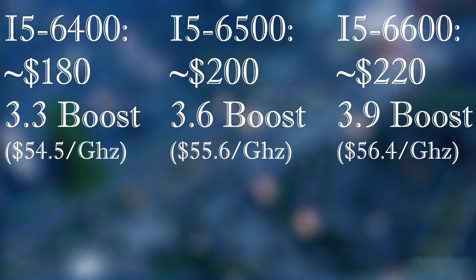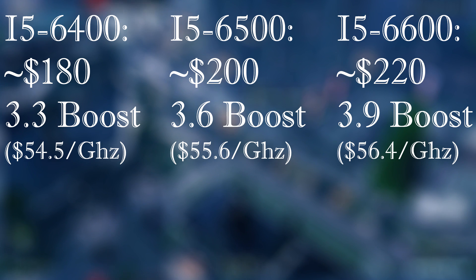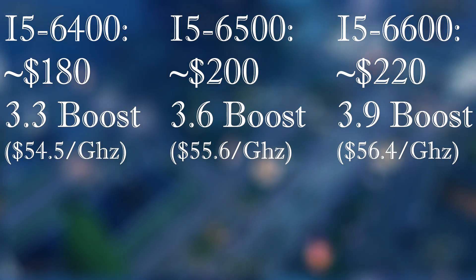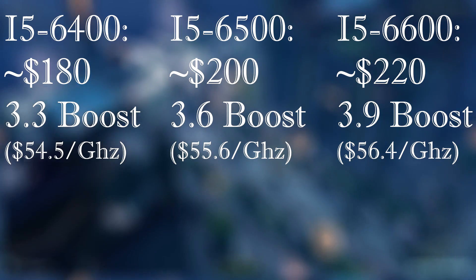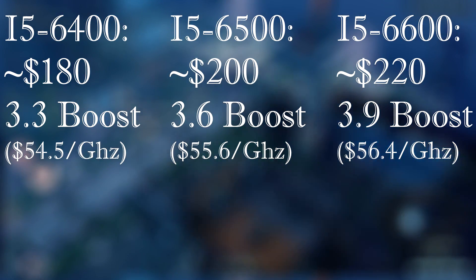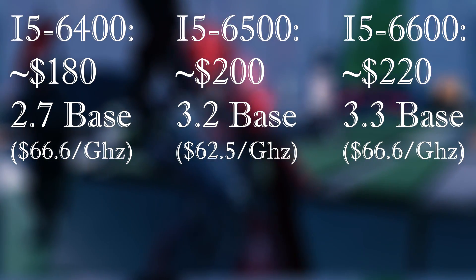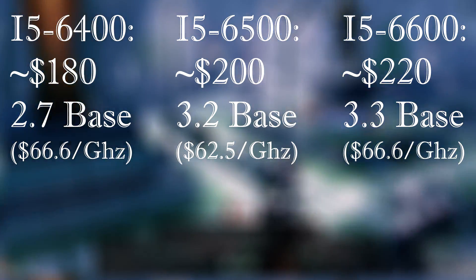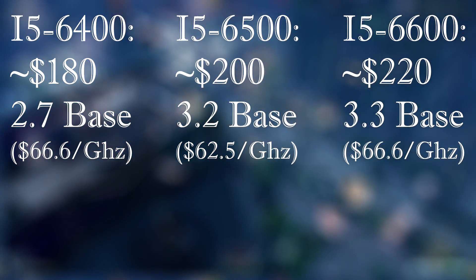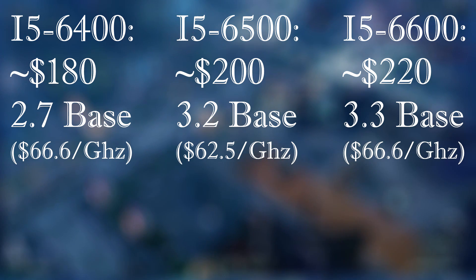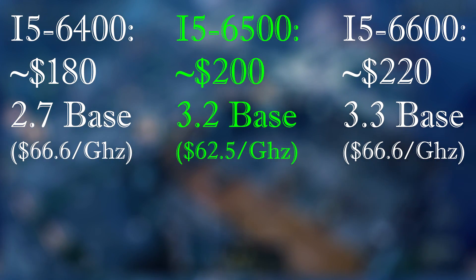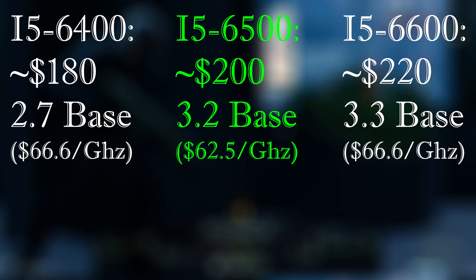The i5-6500 is 10% more expensive than the 6400, and the 6600 is approximately 10% more than the 6500. If we look at only the boost clock, it seems like the 6400 makes sense — its boost clock is about 10% slower than the 6500 and it's priced 10% cheaper, while the 6600's boost clock is about 10% more than the 6500 and is priced 10% more. But looking at the base clock — the more important metric — the 6500 has the best value: its base clock of 3.2 gigahertz is a full 0.5 gigahertz (15%) higher than the 6400 for only 10% more cost, and it's only 0.1 gigahertz (about 3%) lower than the 6600 for 10% less cost. From a base clock perspective, the i5-6500 is the best value for the dollar.